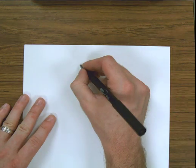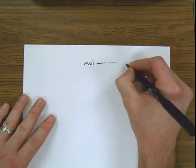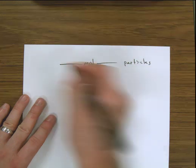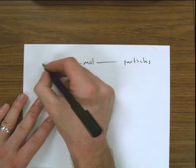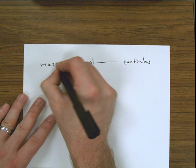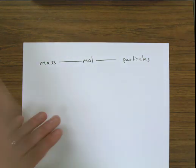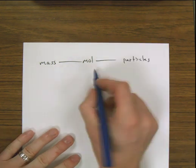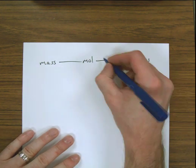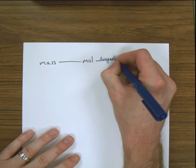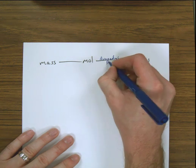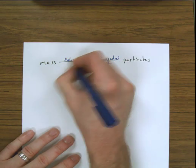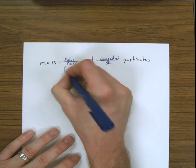One of the things I like to write out is this formula every single time because it gives me a guide about what numbers I need to use. I call this the mole road. It tells me what information I need to convert between different units. When I go between moles and particles, I'm using 6.022 times 10 to the 23rd — Avogadro's number. When going between mass and moles, it's called molar mass, and that information comes from the periodic table.